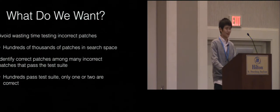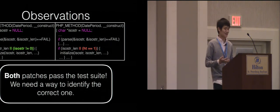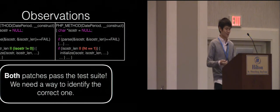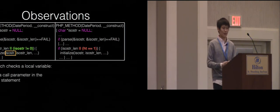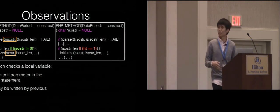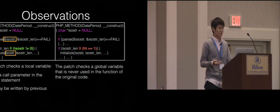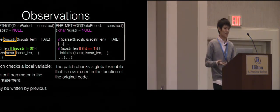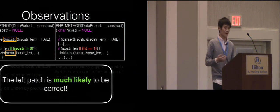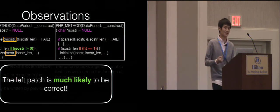Ideally, we want to avoid wasting time testing incorrect patches, since there will be hundreds of thousands of patches in the search space. We also want a way to identify correct patches among the many incorrect patches that pass the test suite. Let's put the correct patch and the incorrect patch that passes the test suite side by side. A human developer would note that the left patch checks a local variable passed as a call parameter in the current statement, which may have been written by a previous call. The right patch checks a global variable that is never used in the function in the original code. Just by looking at these interactions, the left patch makes sense while the right patch does not.